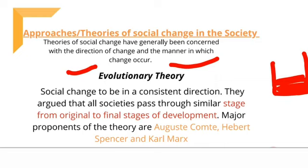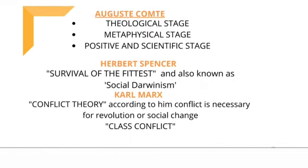Isi tarike se evolution ki baat karte hain social change ki context mein alag-alag thinkers. Majorly thinkers jo hain: Auguste Comte, Herbert Spencer, and Karl Marx. Ye teen hain jo baat karte hain stages ki — kis tarike se stage-by-stage social change hua hai. Auguste Comte ne society ko teen portions mein divide kiya hai: first is theological stage, second is metaphysical stage, and third is positive or scientific stage.